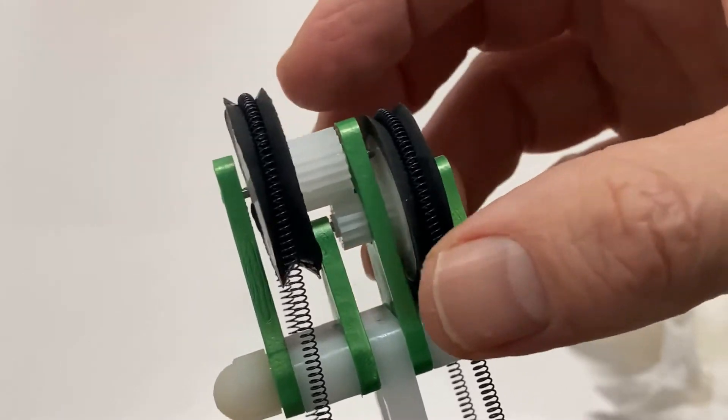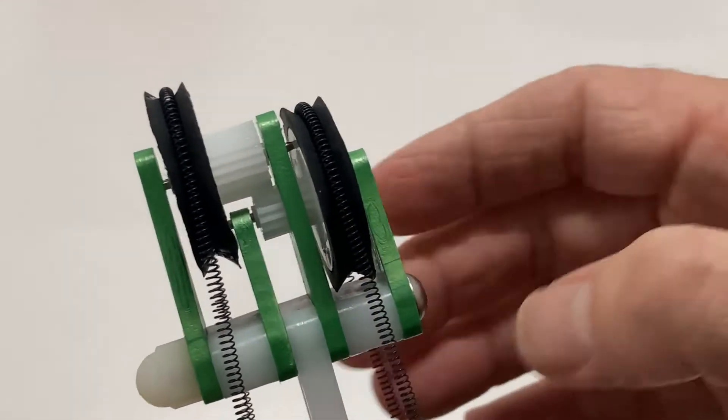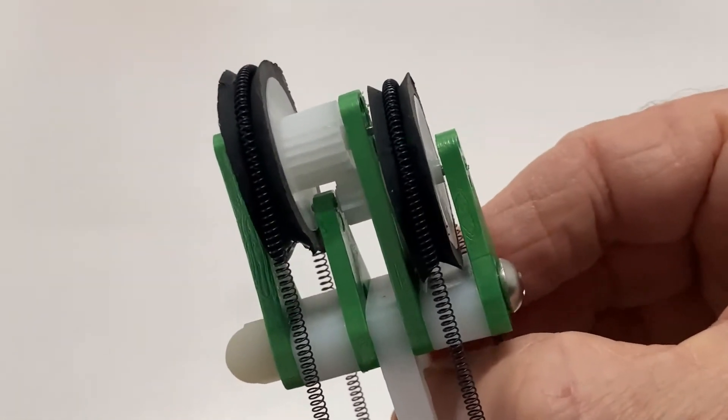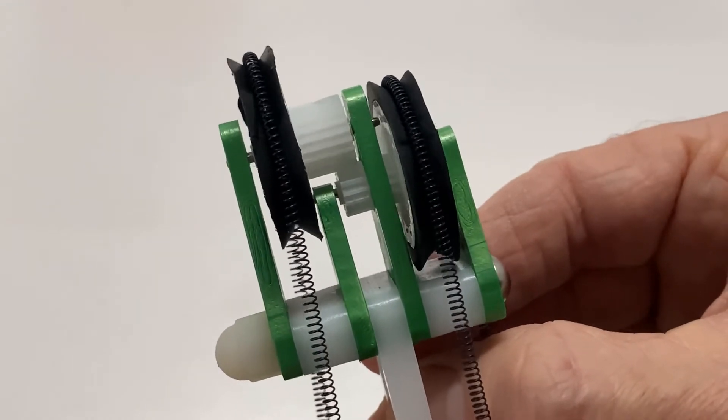It then enters the hot water bath where it contracts and pulls the next section of spring around the small gear pulley, and the process repeats.